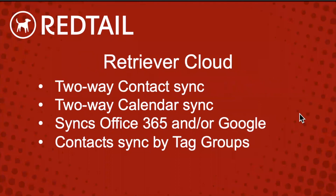The next two options are Retriever Cloud, and I've combined them into one section because there are two versions depending on what you want to sync. Both versions offer a two-way contact sync and a two-way calendar sync by default. When you set up the integration, it creates a specific Redtail folder on Office 365 or Google for the Redtail calendar and contacts. A great benefit of Retriever Cloud is it's all web-based and instant — after the initial sync, adding an activity on either side automatically syncs it to the other program right away.